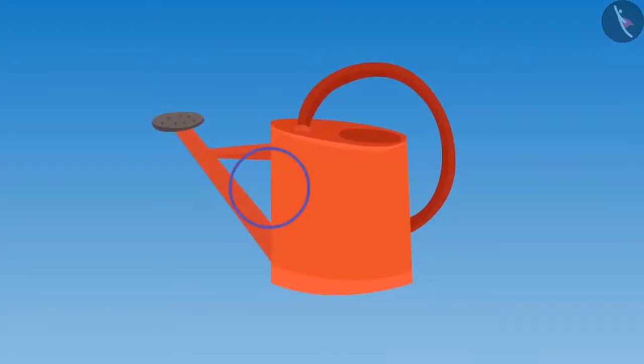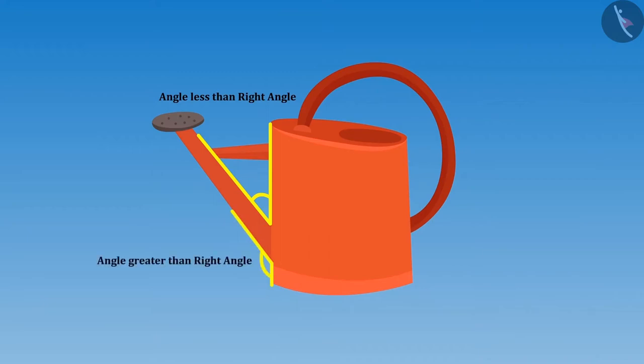Look here. If we look at this corner carefully, we can see two lines joining together. Tell me whether this is less or greater than a right angle. Didi, this is less than the right angle. But if we look below this pipe, we can see an angle here. And I think this is greater than a right angle. Yes, you identified it correctly, Riva. There is an angle less than a right angle and an angle greater than a right angle in this can.